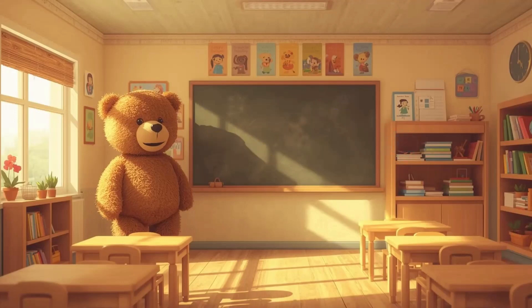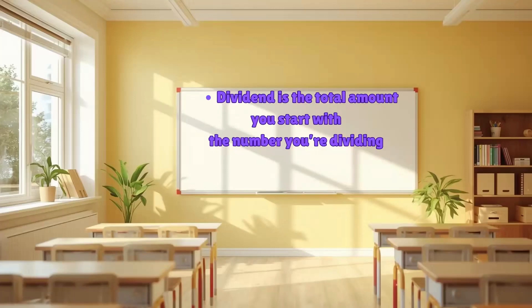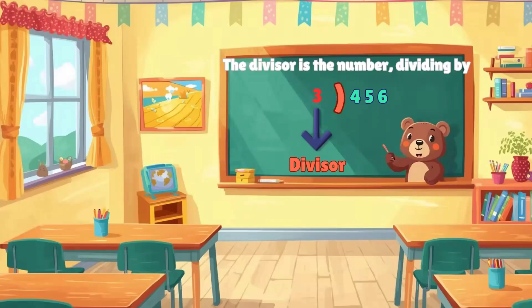Long division breaks a larger number into smaller parts for equal distribution. Let's clarify some terms. The dividend is the number being divided, which is 456 in this case. The divisor is the number we divide by, so here, the divisor is 3.